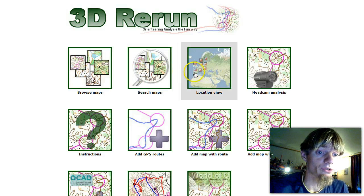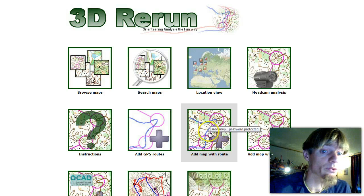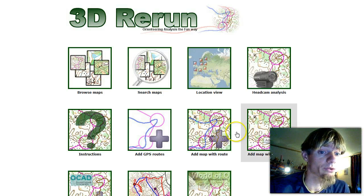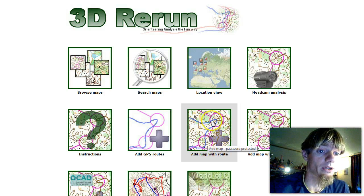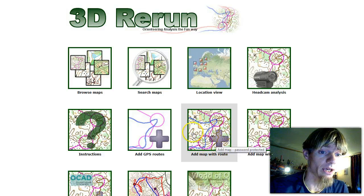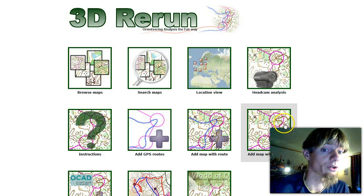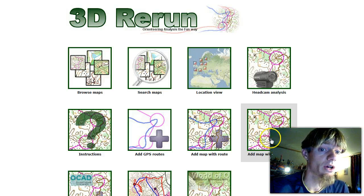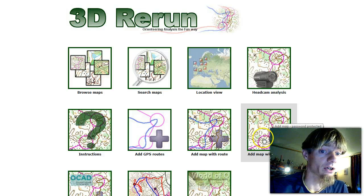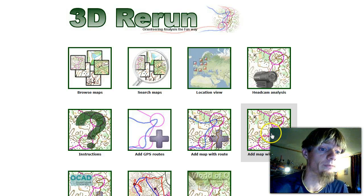The first thing you have to do is upload a map with route or without route, either by following the screencast 'Add Map with Route' where you calibrate the map, or following the screencast 'Add Map without Route' where you take one of your routes, upload it via QuickRoute, and the screencast about that.